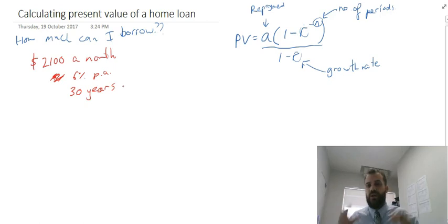So the question is, I can afford $2,100 a month, the bank's charging 6% per annum and compounding monthly, and I've got 30 years to pay it off, how much can I borrow?